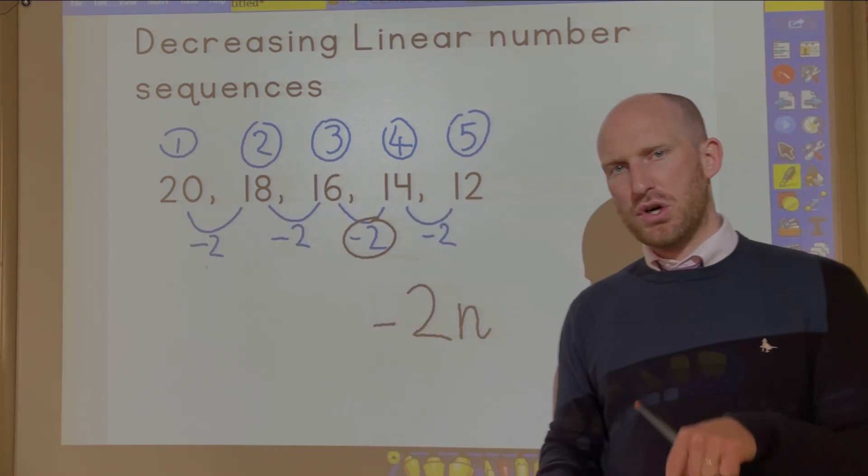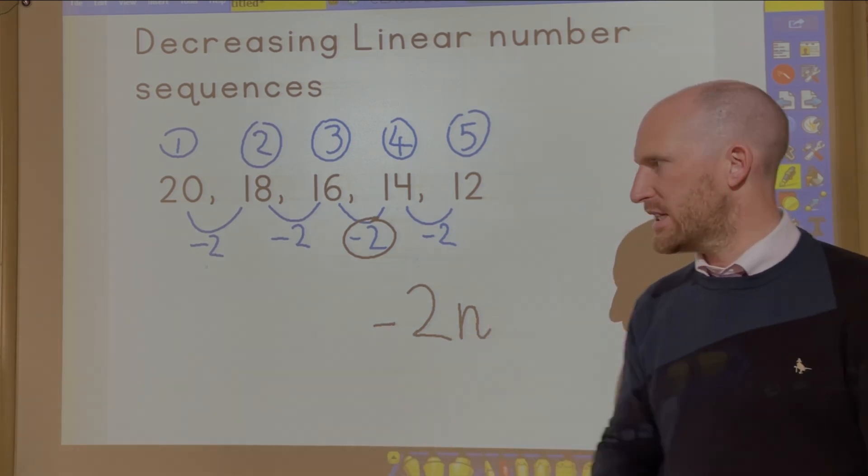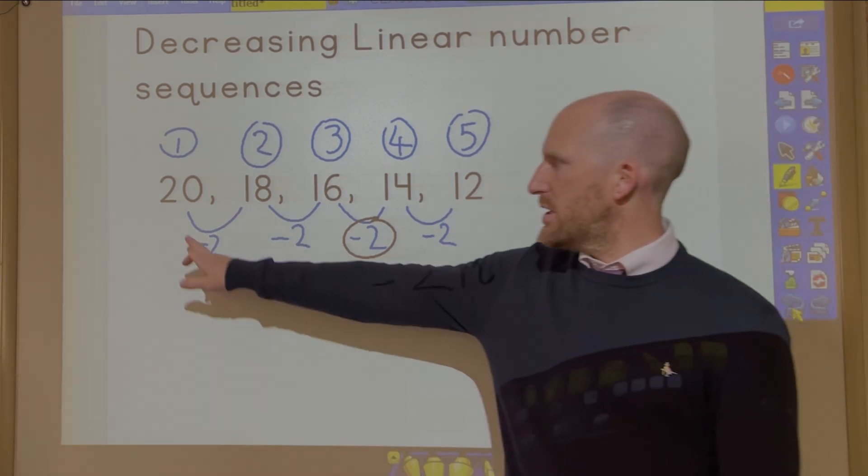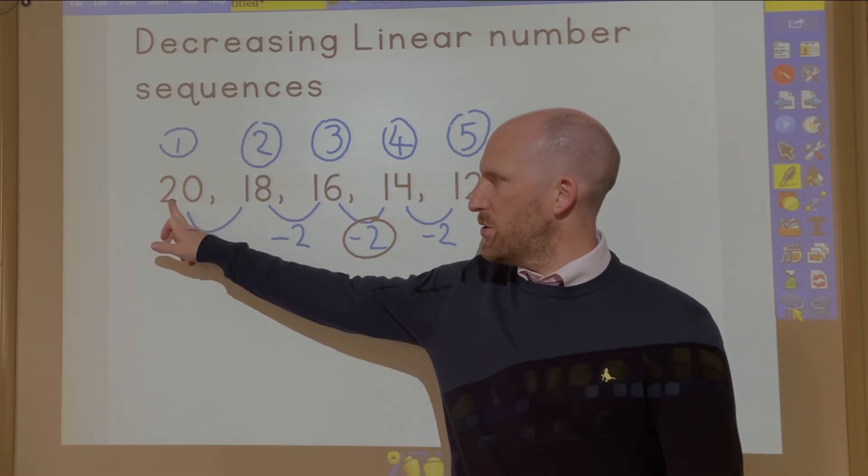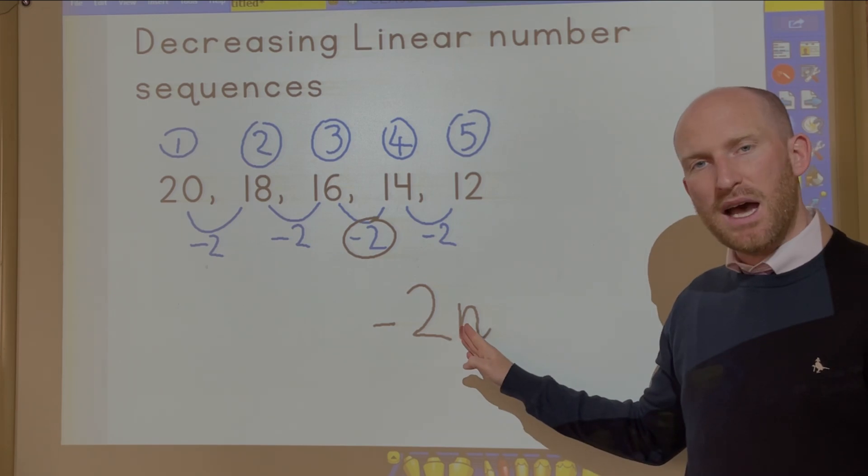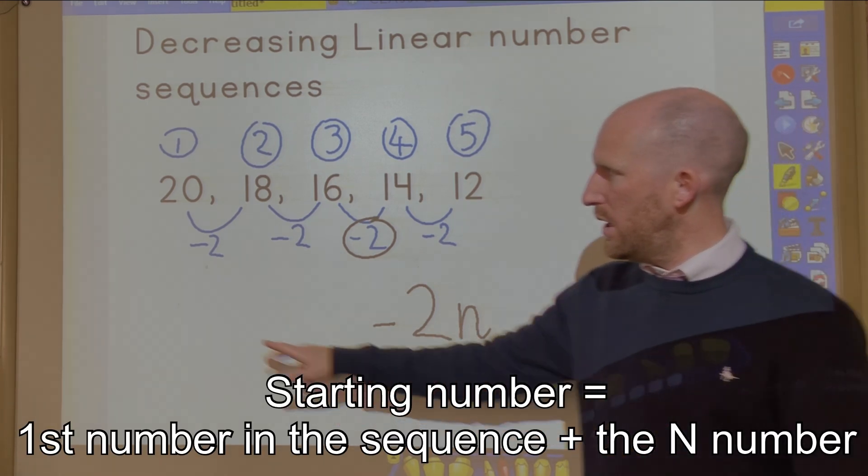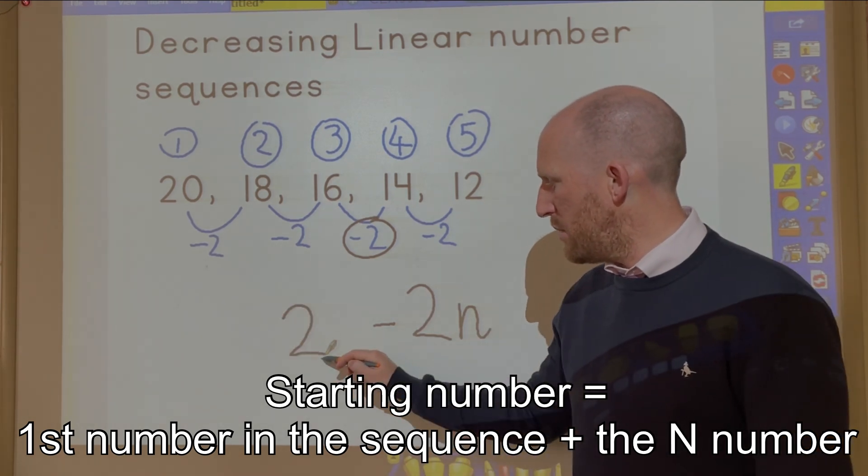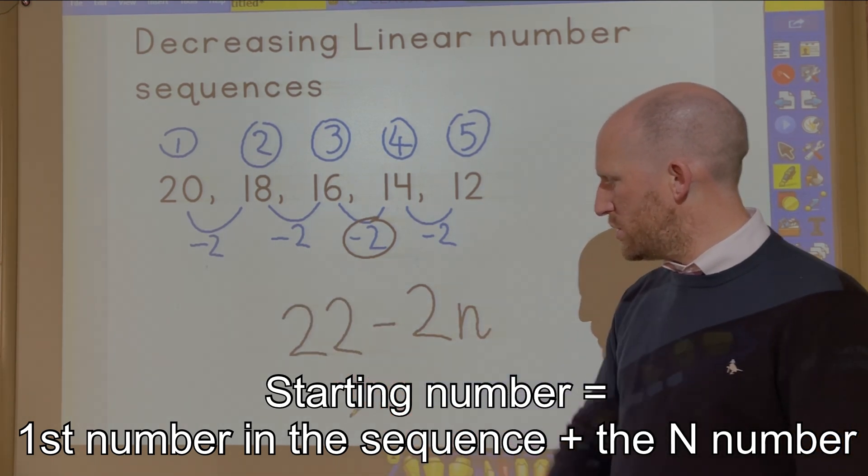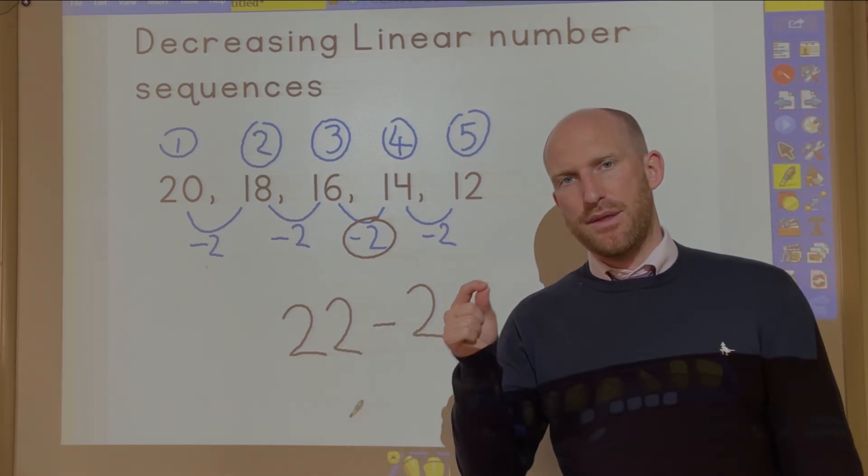And this is a great shortcut on how to find that first all important starting number. Basically you add your starting number and the number from the second half of your nth term together. So 2 add 20 makes 22. And there I have completed my nth term.